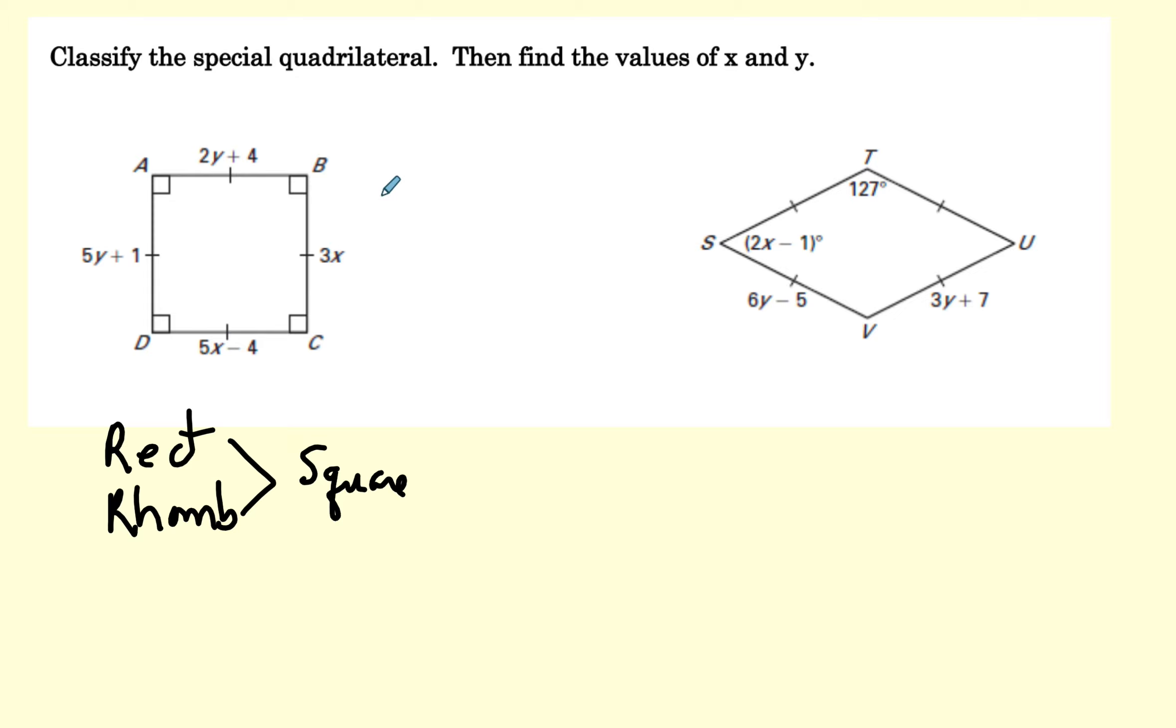So we know these two we can set equal to each other. So 3X equals 5X minus 4. I'm going to subtract 3X from both sides. And now I'm going to add 4 to both sides. And so X will be equal to 2.